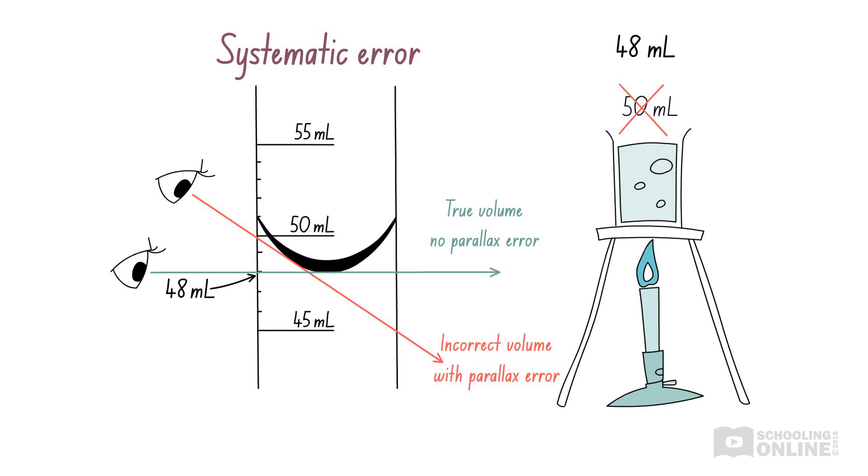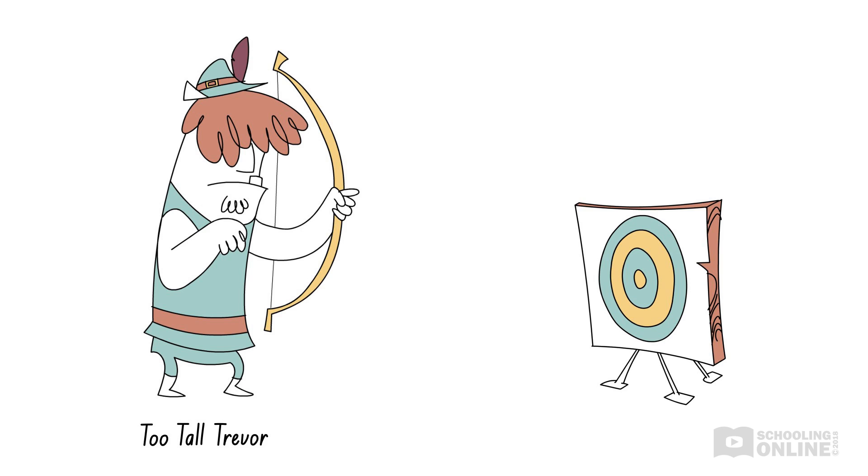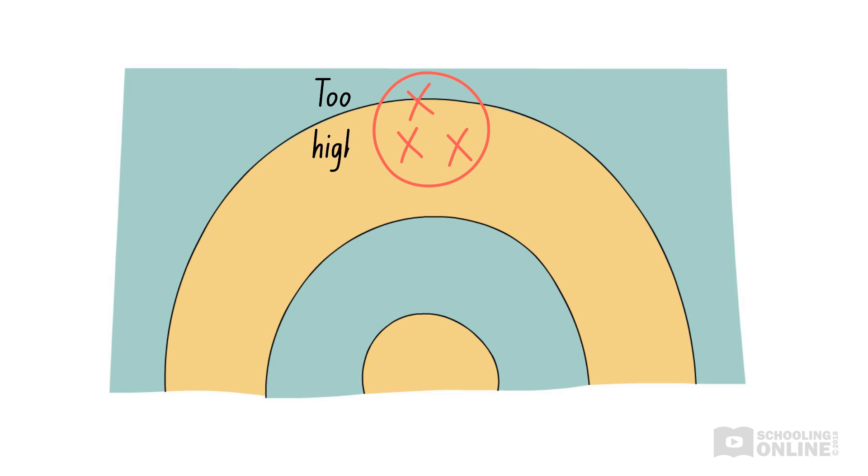In this case, our result is less accurate because it is lower than the true value, as we have used the instrument incorrectly. This is just like one of Robin Hood's competitors, Too Tall Trevor. Too Tall Trevor is simply too tall and he makes the mistake of forgetting to adjust for his height when firing his arrow. So, unfortunately, all of his arrows land above the bullseye. Just like when we don't look at our meniscus correctly, Too Tall Trevor's height is introducing a systematic error to his arrows, leading to a repeated, reproducible error in a single direction.